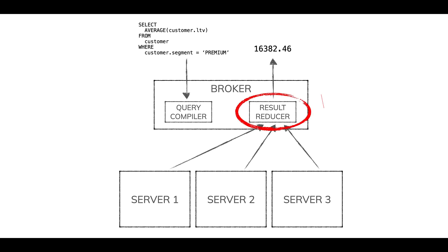But if you had large amounts of data coming back — like you might with a join — that result reducer is going to fall over. The broker is going to fall over doing all that IO. It's not going to work.